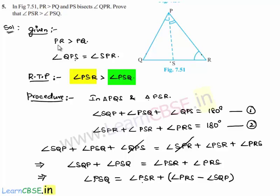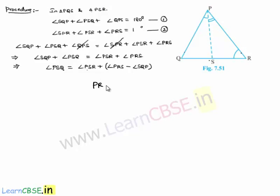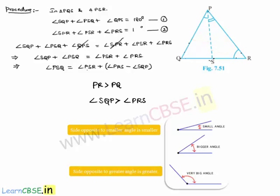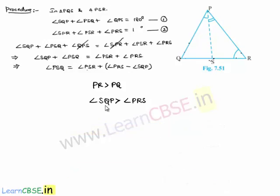From the given relation that PR is greater than PQ, the angle opposite to the larger side is larger. So angle opposite to PR, which is angle PQS (or SQP), is greater than the angle opposite to PQ, which is angle PRS. Therefore, angle SQP is greater than angle PRS.